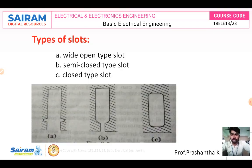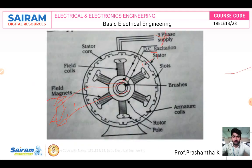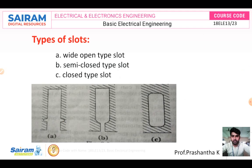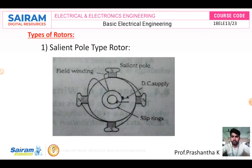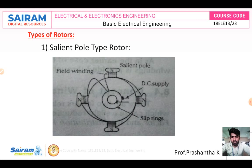There are different types of slots we use: wide open type slots, semi-closed type slots, and closed type slots. Regarding the salient pole rotor, its diameter is large with a small axial length. But in the non-salient pole rotor, the diameter is small and the axial length is large.